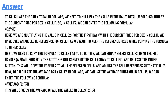So the correct answer is: to calculate the daily total in dollars, we need to multiply the daily total sold column by the current price per box in cell L1. So in cell F2, we have to enter the formula =B2*$L$1. Here we are multiplying the value of B2 with the current price per box in L1. We have used an absolute reference for cell L1 as we want to keep the reference fixed while copying the formula to other cells.